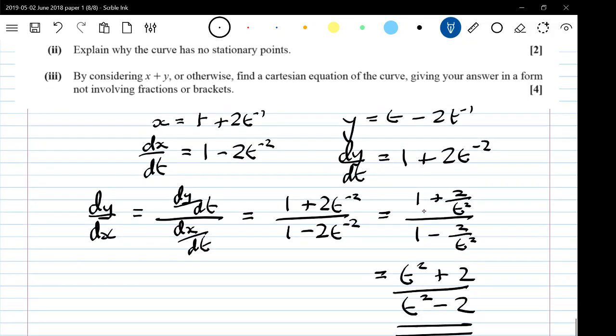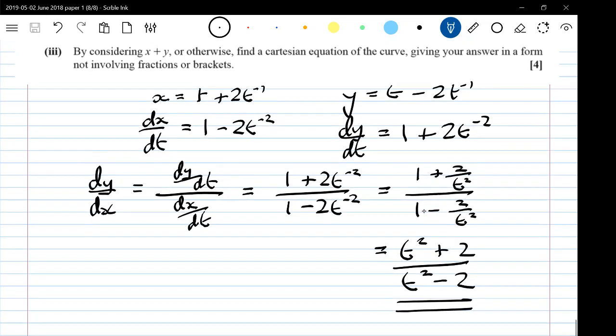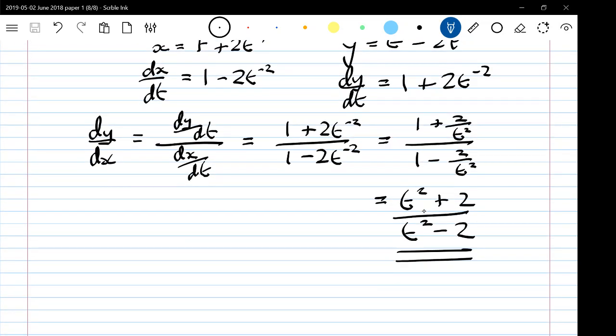Now, it did say explain why the curve has no stationary points. It must be in terms of what we've just done. We've just found dy by dx, so this must be a question about dealing with that derivative. Stationary points depend on dy by dx being 0. So it's stationary if dy by dx equals 0, and that would imply that t squared plus 2 would need to be equal to 0.